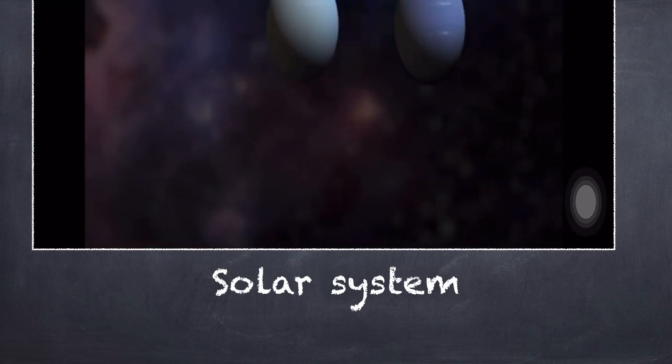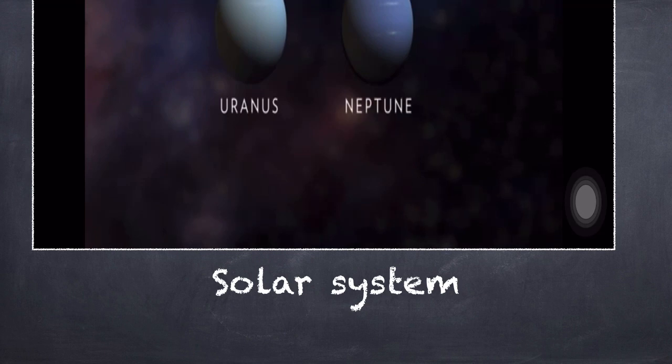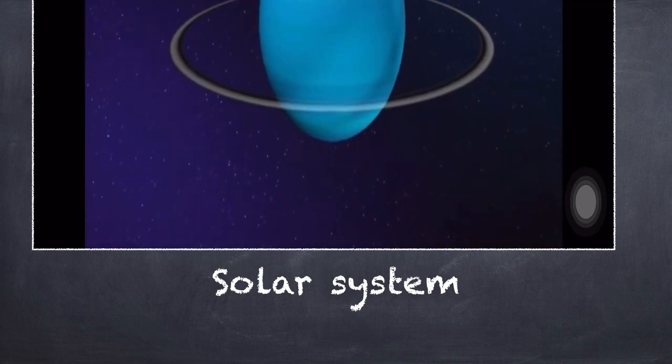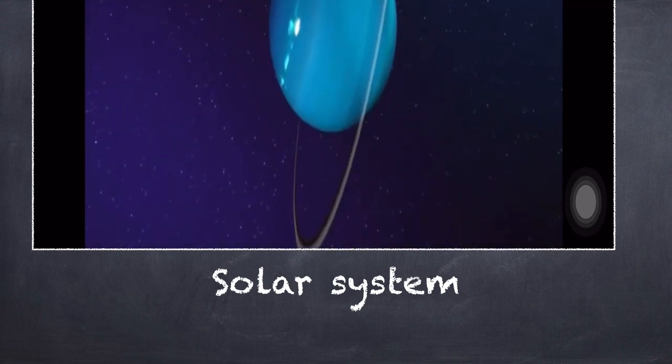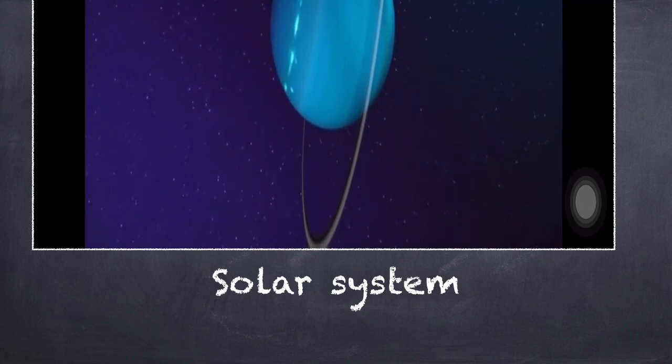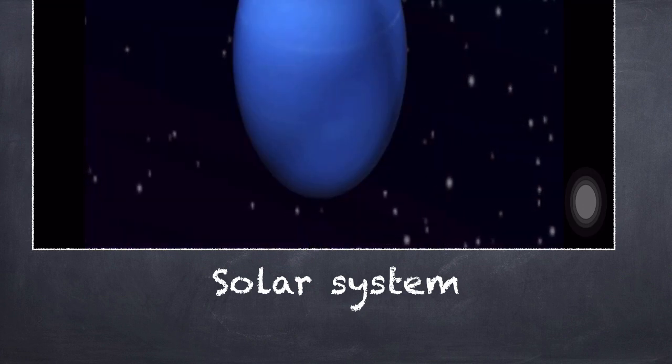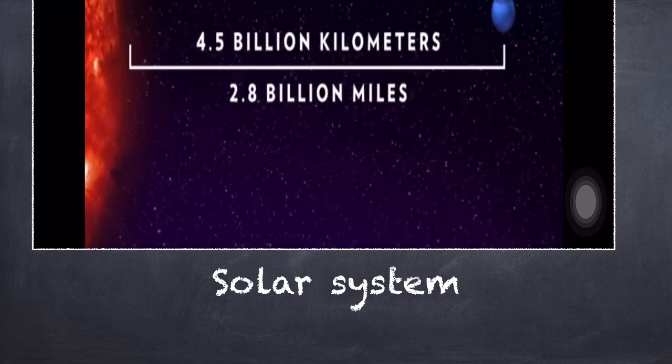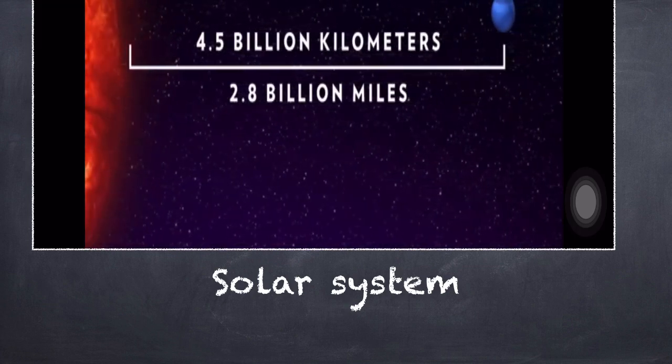Past Saturn are the ice giants Uranus and Neptune. The slightly bigger of these ice giants, Uranus, is famous for rotating on its side. Next is Neptune, the outermost planet in the solar system and also one of the coldest.